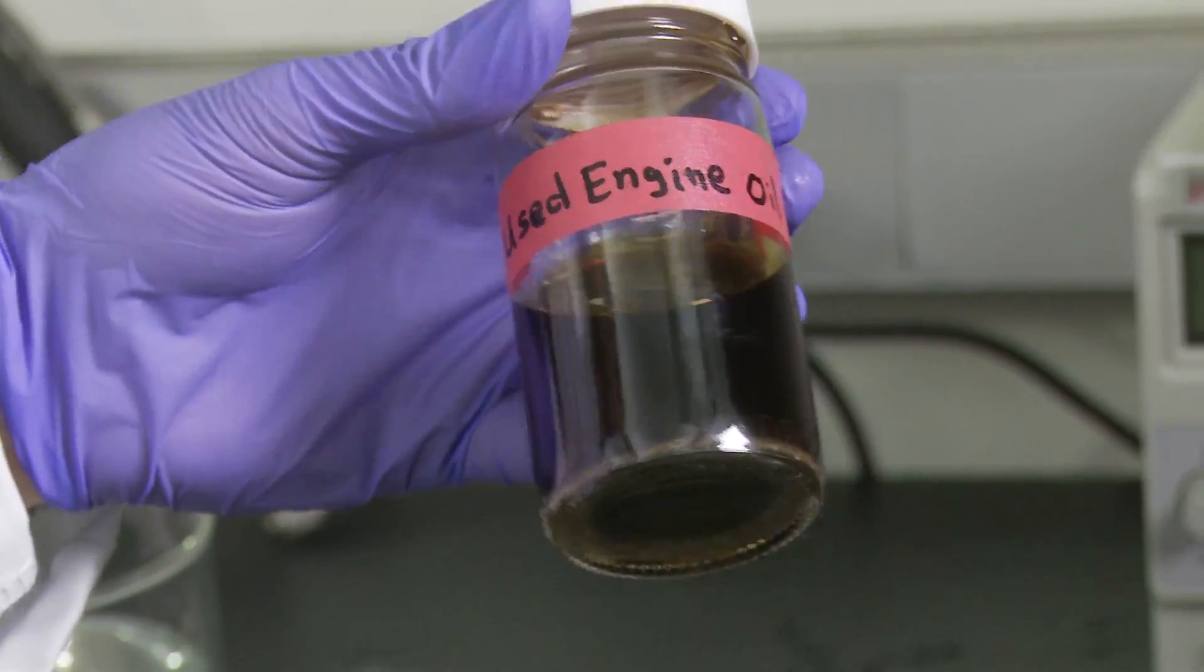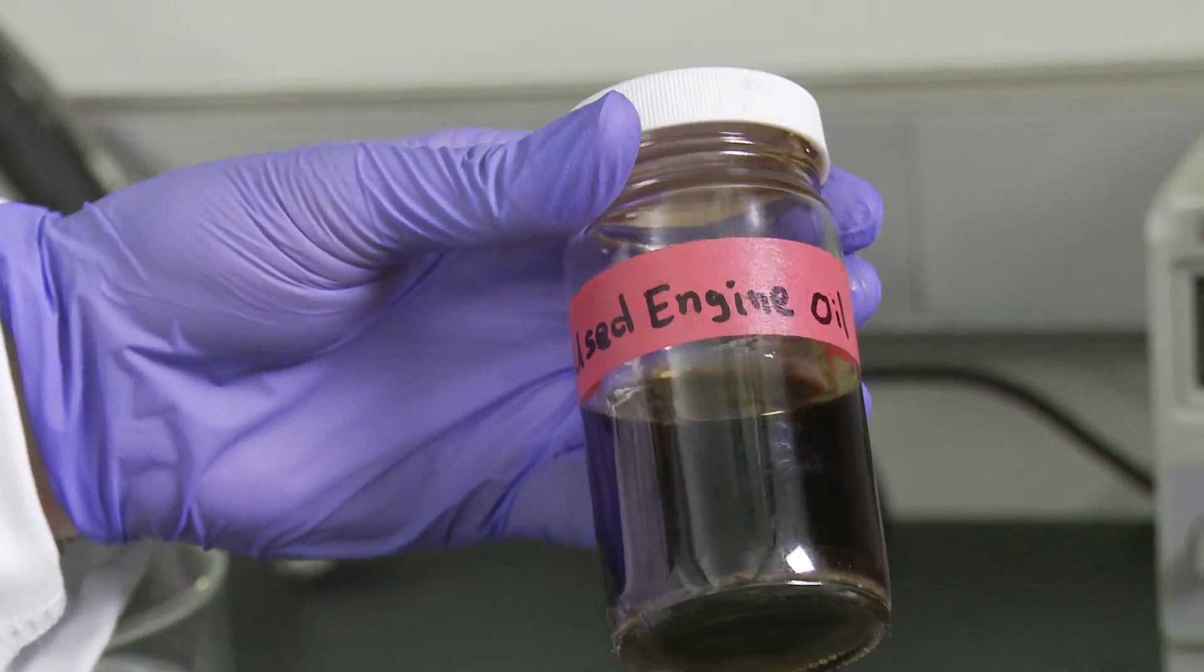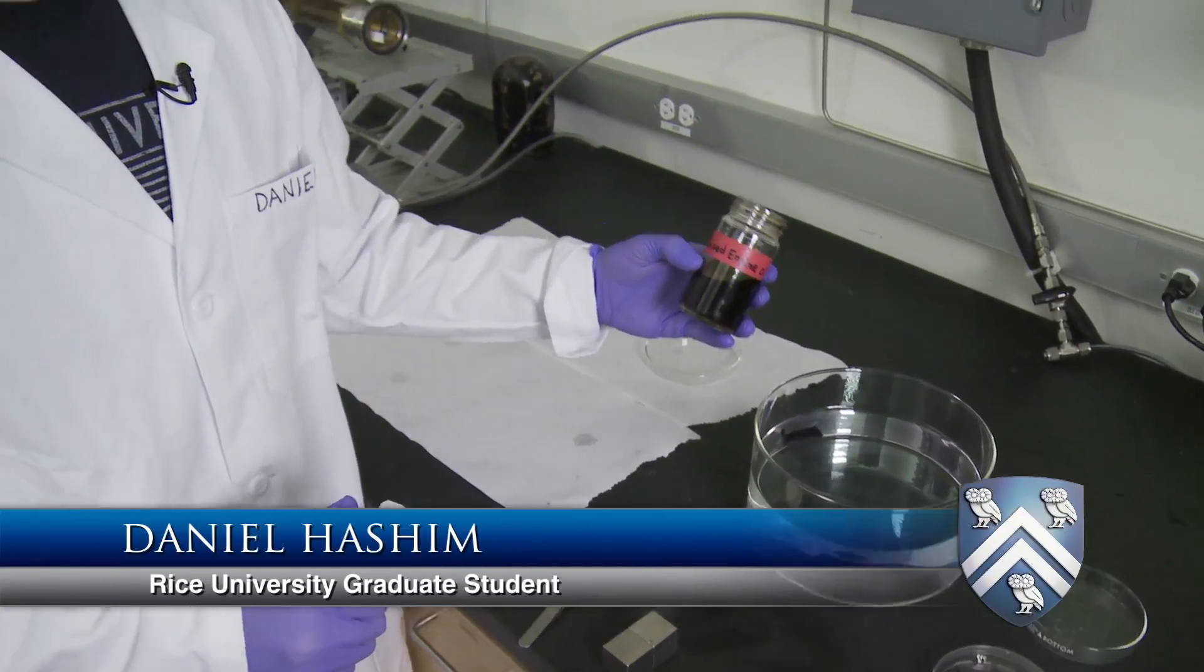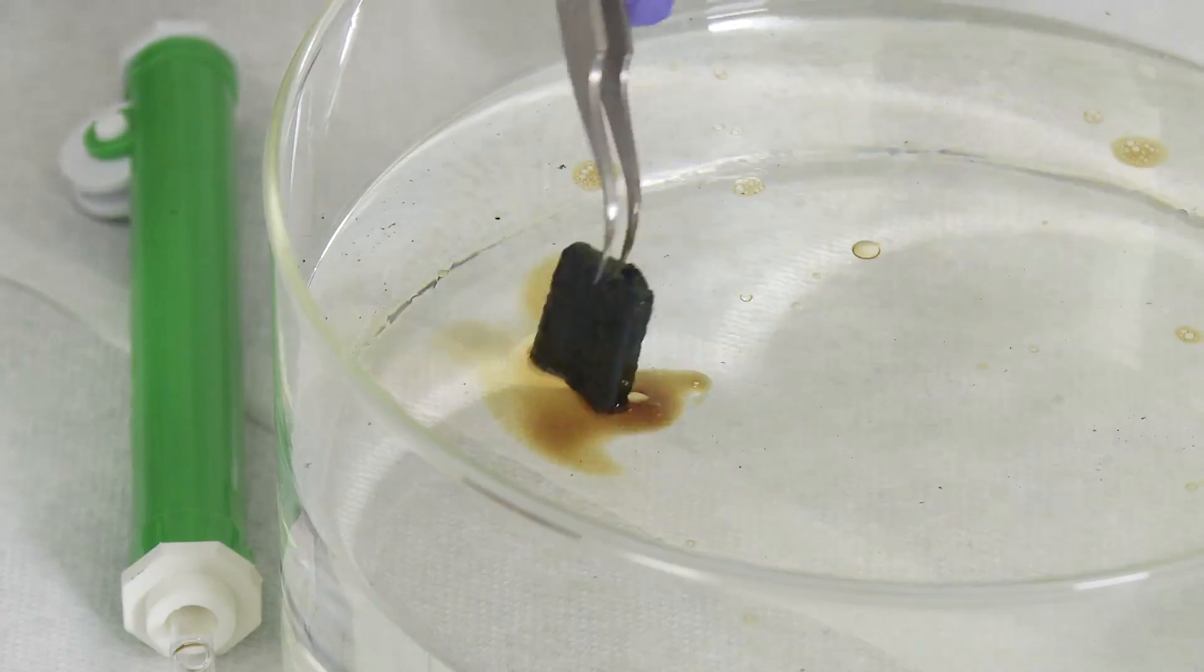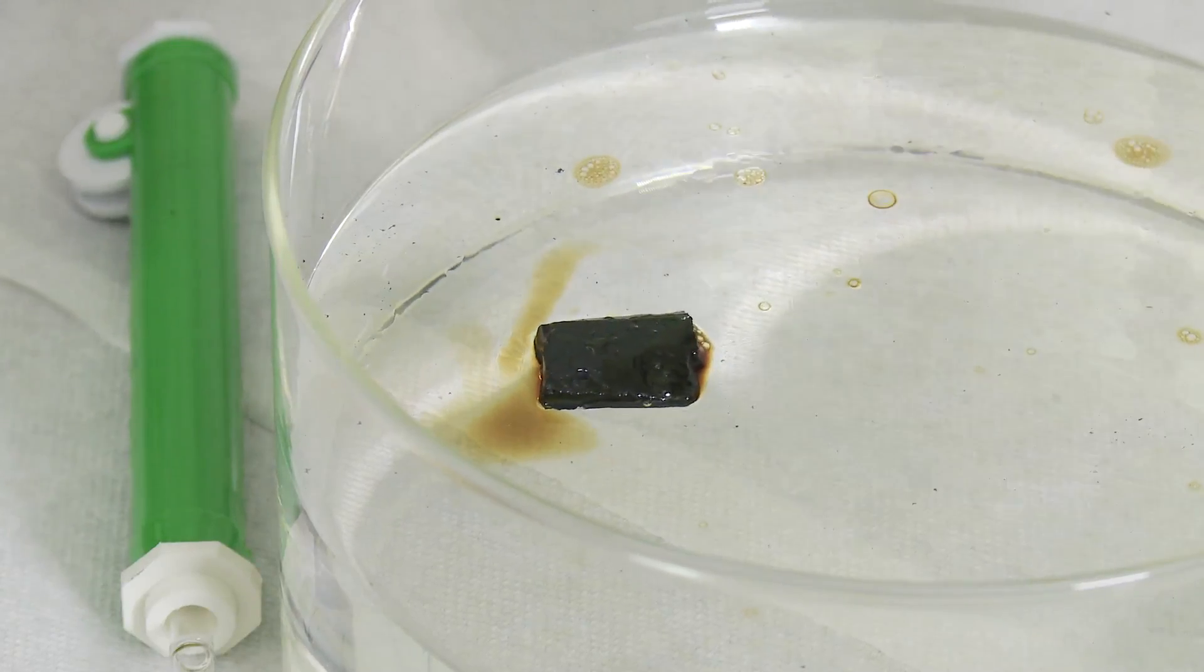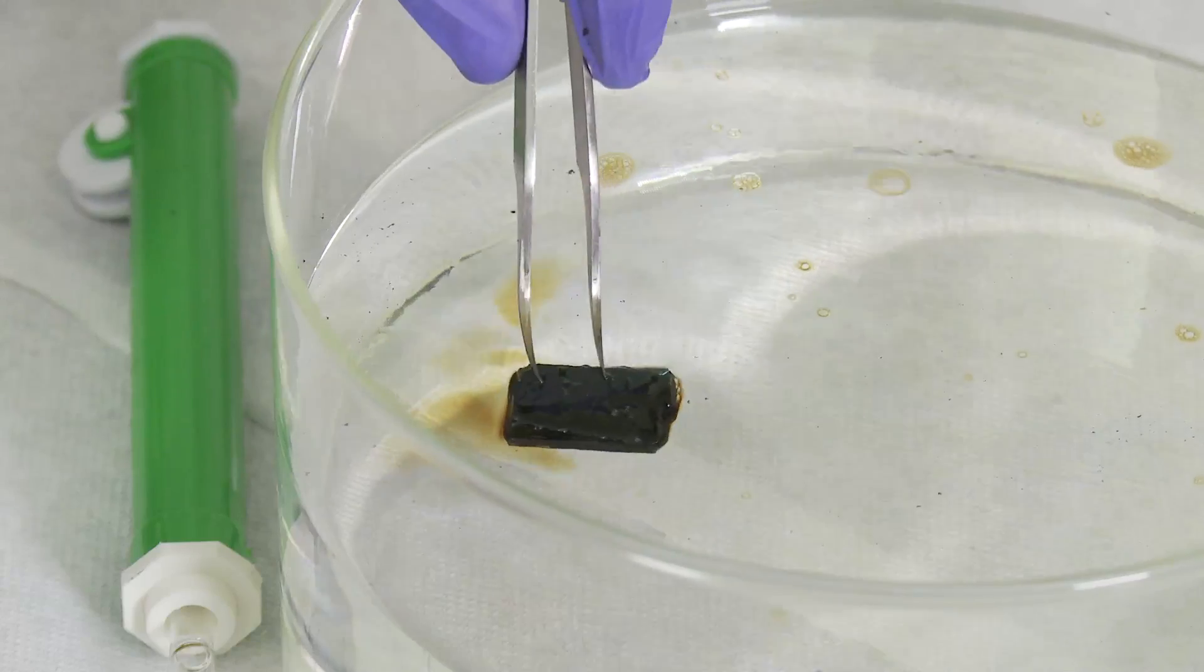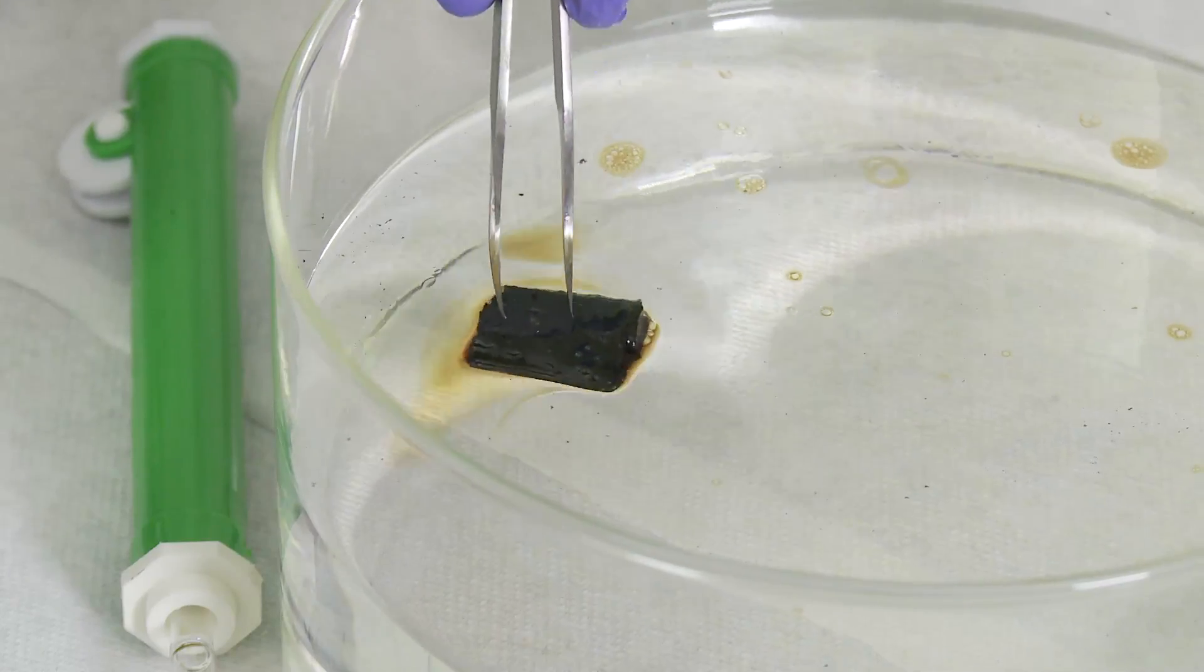This is used engine oil I got from a local gas station. What we're going to do is drop some of this oil into this water and have our carbon nanotube sponge material absorb the oil selectively out of the water. I'm going to take one of our carbon nanotube sponge materials and drop it right there on the oil. You'll see immediately it starts to absorb the oil.